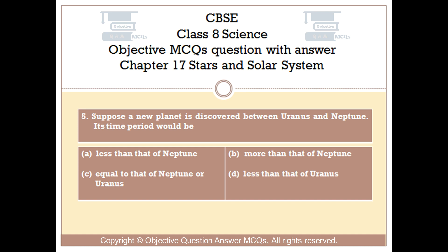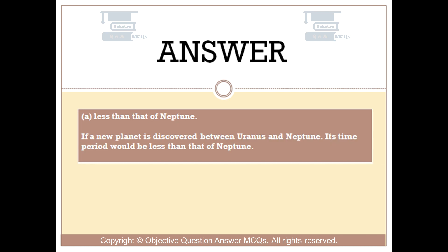The right answer is Option A. If a new planet is discovered between Uranus and Neptune, its time period would be less than that of Neptune.